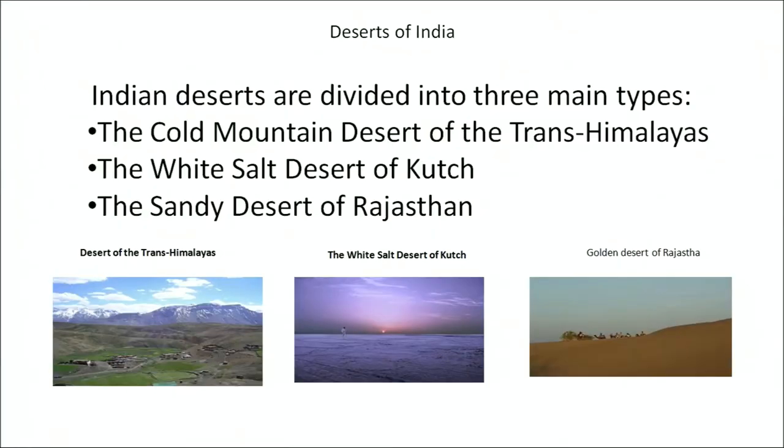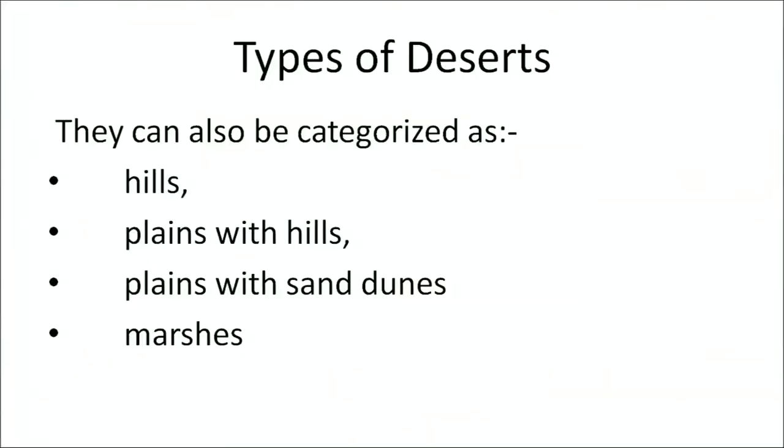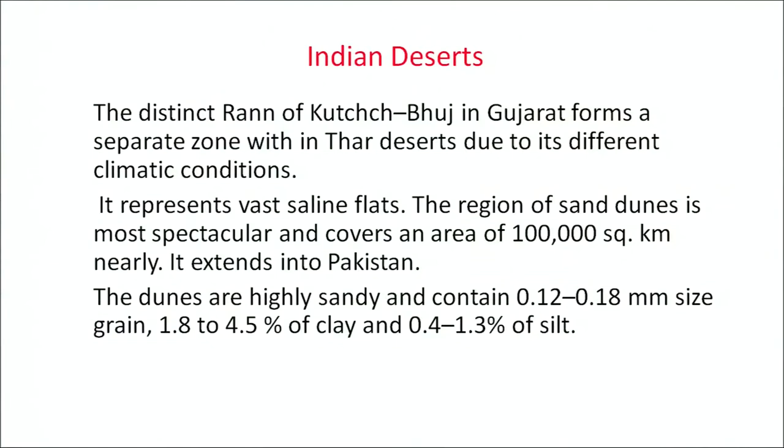We now come to the next important biome of India: the deserts. The Indian deserts are divided into three main types — the cold mountain deserts of Trans-Himalayas, the white salt deserts of Kutch, and the sandy deserts of Rajasthan. These deserts can also be classified on the basis of their location: hills, plains with hills, plains with sand dunes, and marshes. The distinct Rann of Kutch in Gujarat forms a separate zone within the Thar deserts due to its distinct climatic conditions, and it represents vast saline flats.